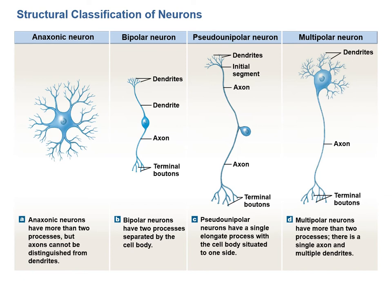The bipolar neuron has two processes — an axon and a dendrite separated by the cell body. These are very rare and typically relay information from special senses, involved in sight, smell, and hearing. The pseudounipolar neuron, sometimes called simply unipolar, has a single axonal process with the cell body to the side. Sensory neurons in the peripheral nervous system are typically of this type.